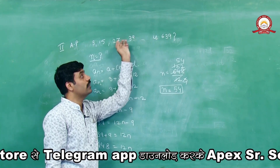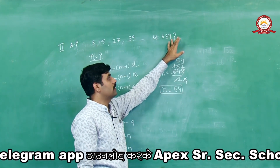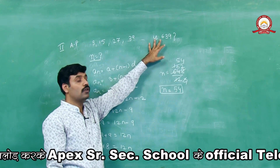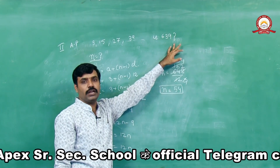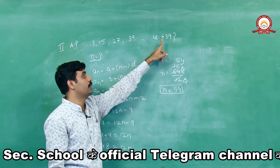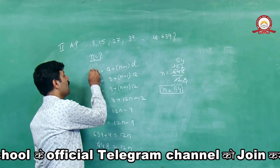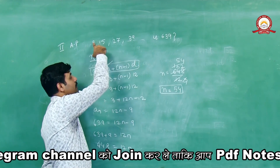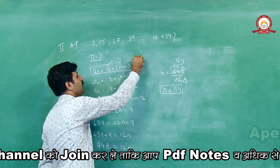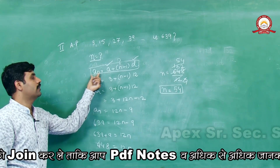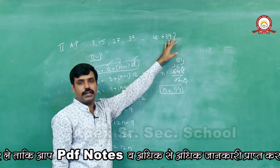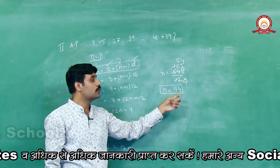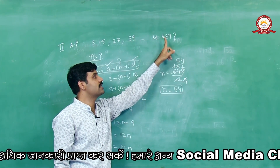कैसे solve किया: AP given था, find करना था कि 639 कौन से number पर situated है। General formula AN = A + (N-1)D में A = 3 और D = 12 substitute किया। AN = 639 set करके N find किया। N = 54 आया — so 54th term of this AP is 639।